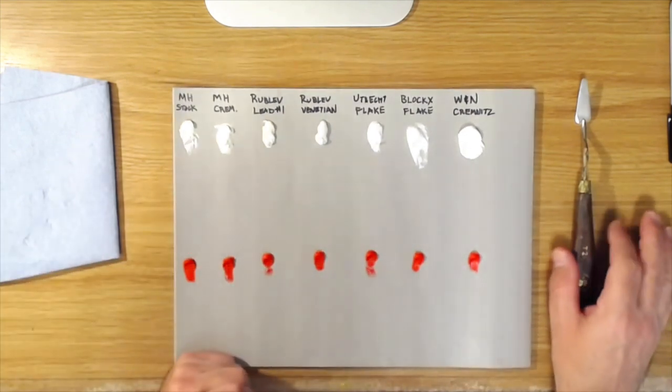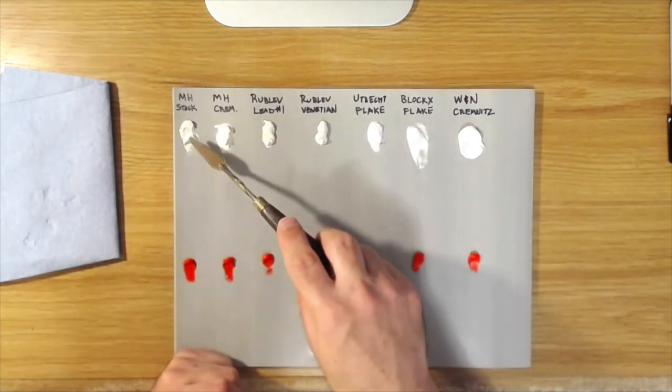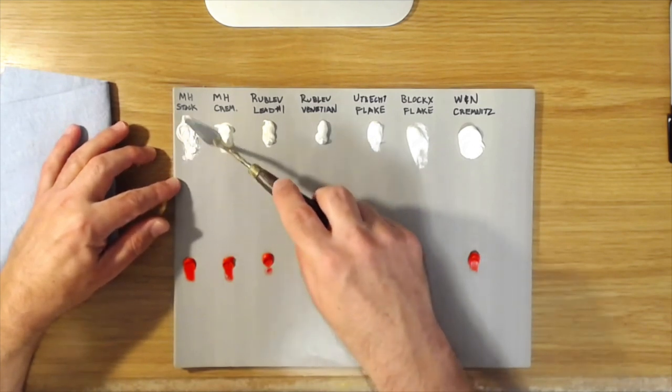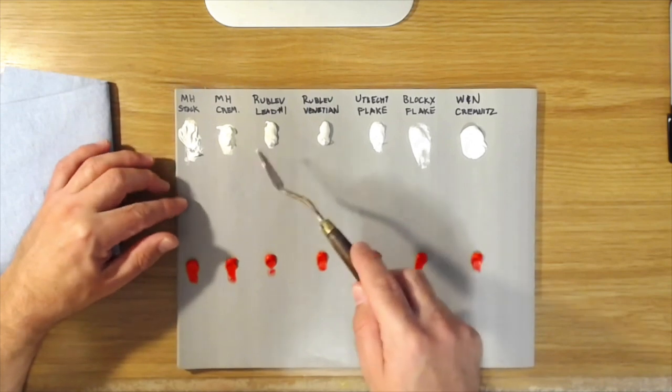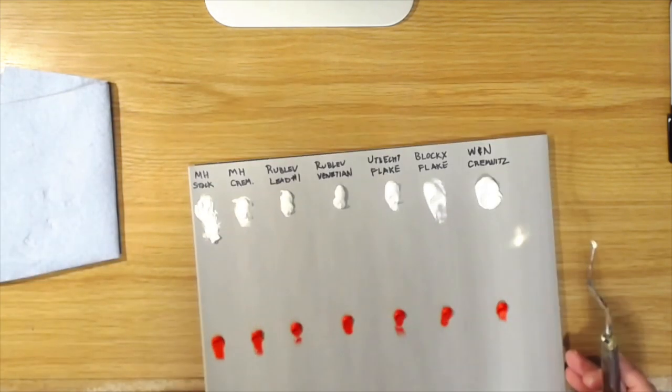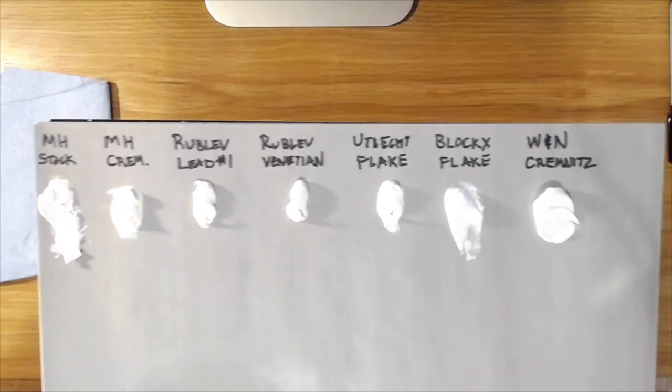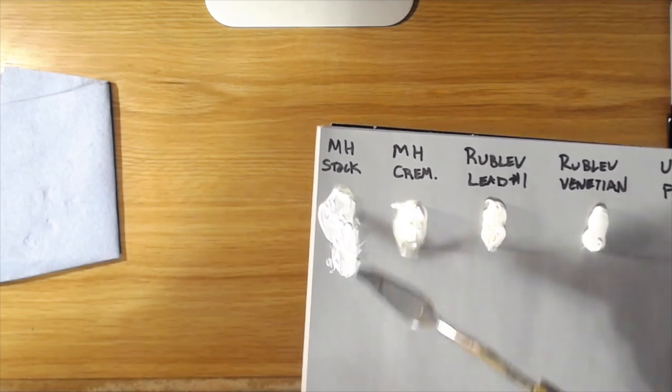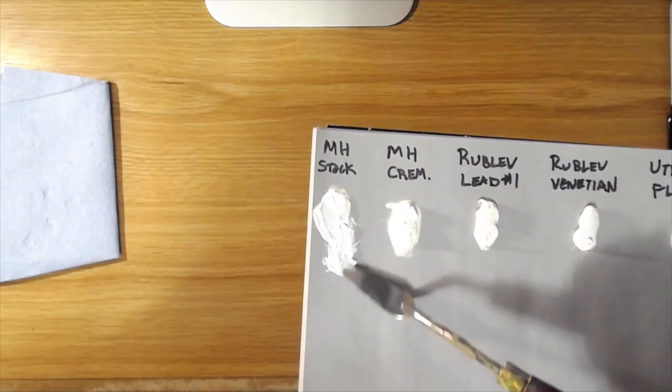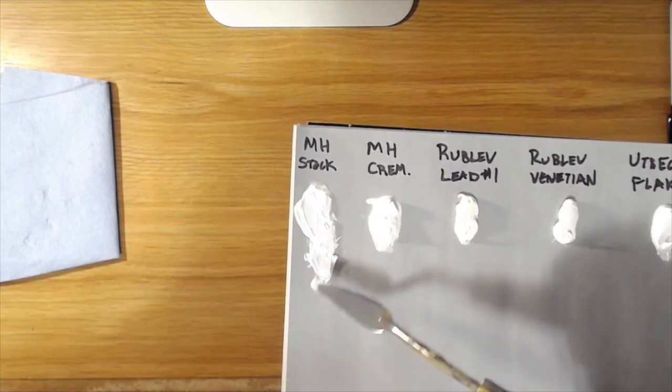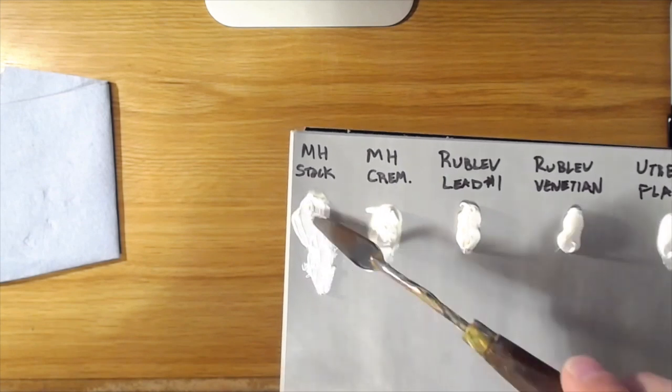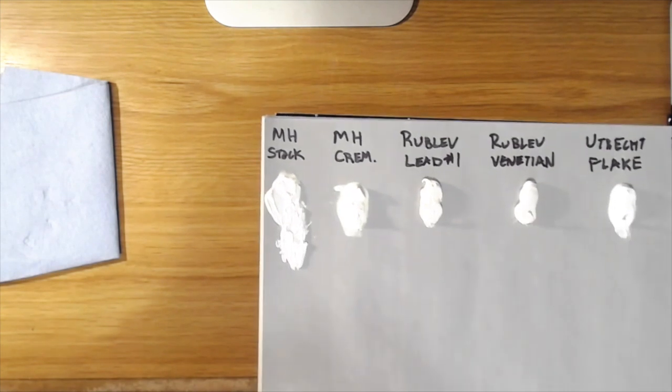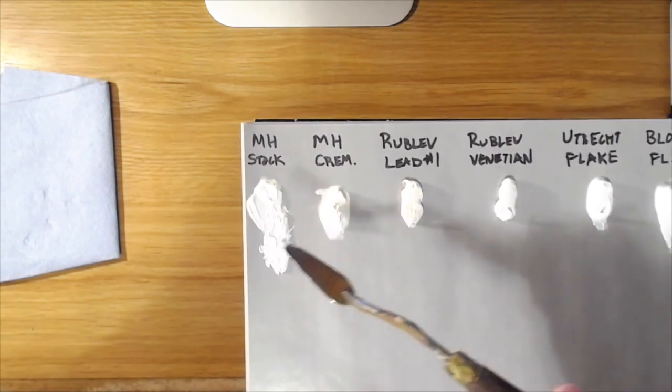Let's start with the stack lead white, the Michael Harding. One of the things you'll notice, and I'll see, you'll see this again in a couple of the others, is, and this is one of the qualities that lead white has, is that when I draw the knife through it, you see how it's kind of ropey and stringy? I don't know if it's really showing up too well on the camera, but that's one of the qualities that lead white has because of the nature of the pigment that artists tend to like.